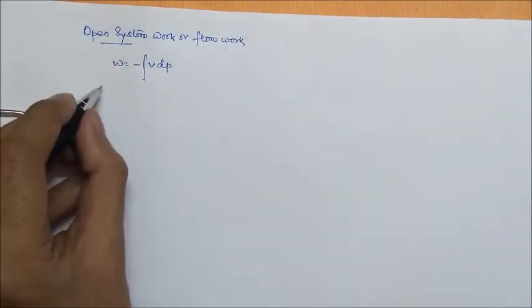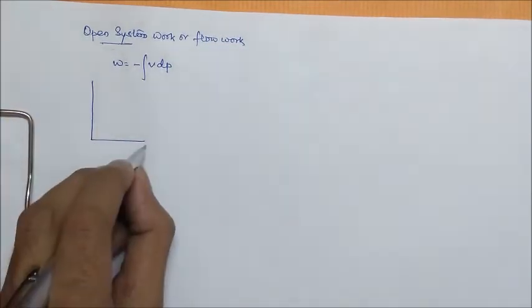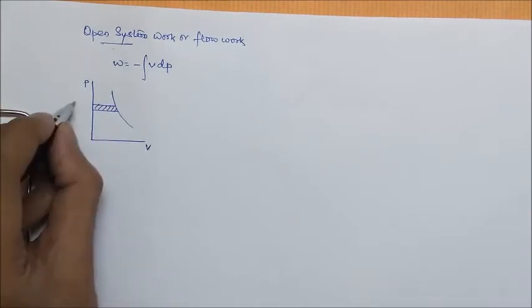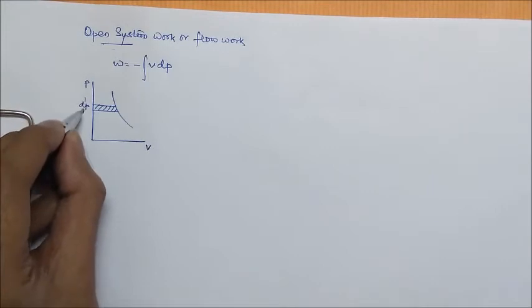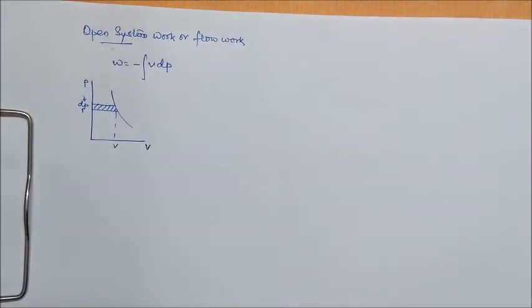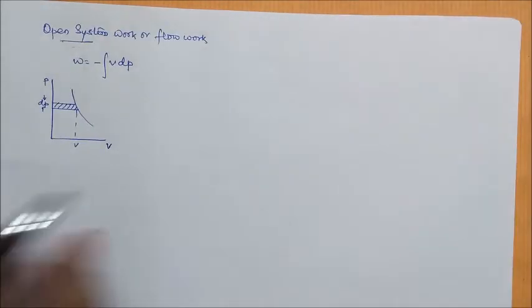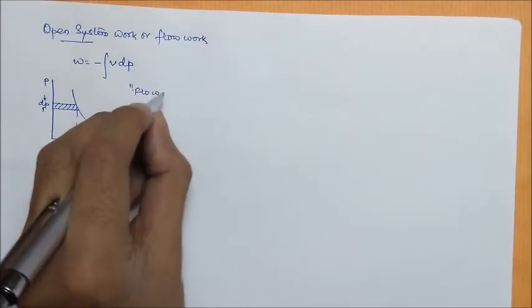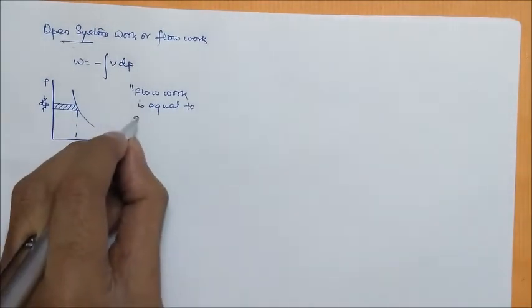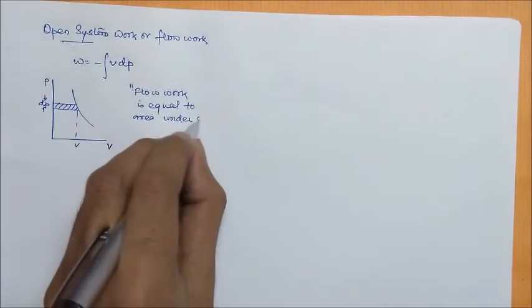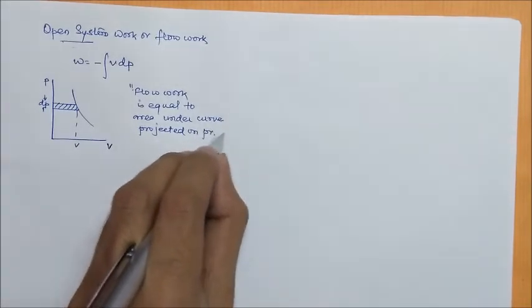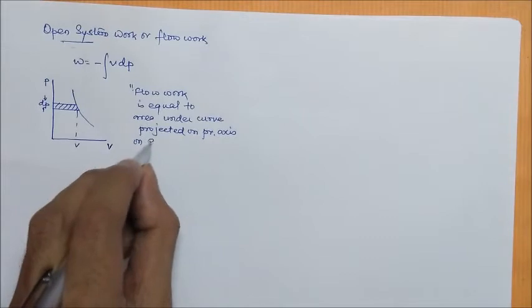Now, if we draw this on a PV plot, then the area under the curve projected on pressure axis will define the open system work. We can write it as: flow work is equal to area under curve projected on pressure axis on PV plot.